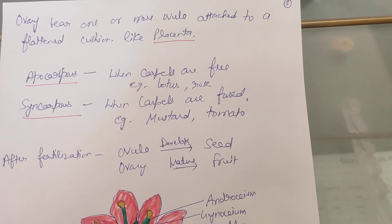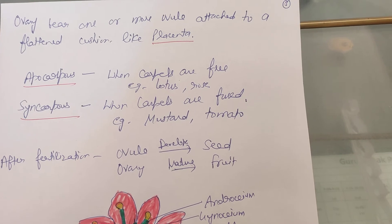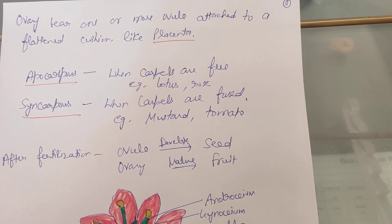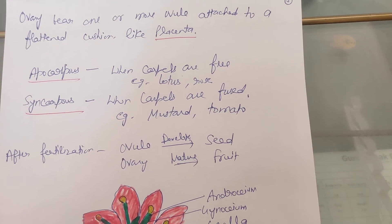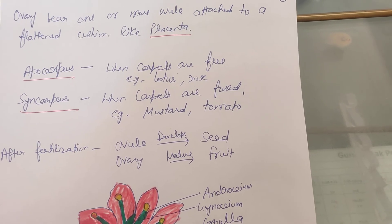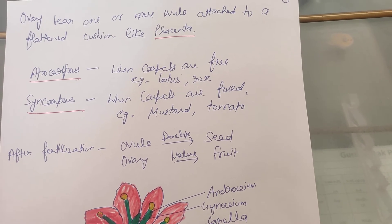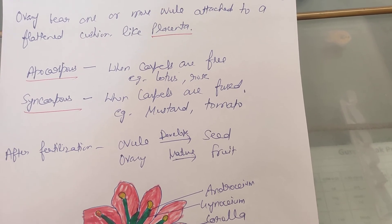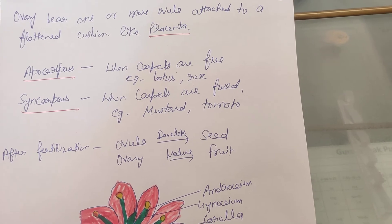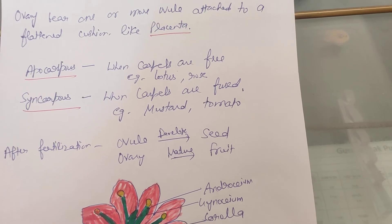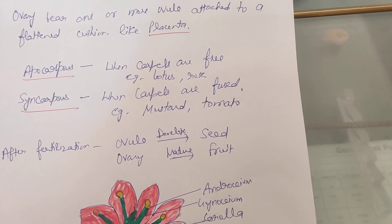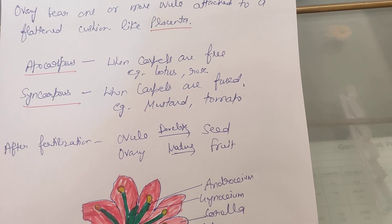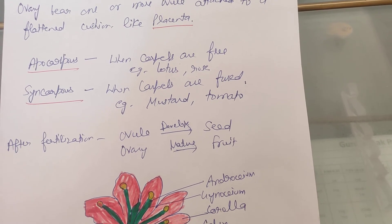The ovary contains one or more ovules which are attached to the placenta. The placenta is a flat cushion-like structure. There are two conditions: apocarpous, when carpels are free, as in lotus and rose, and syncarpous, when carpels are fused, as in mustard and tomato.